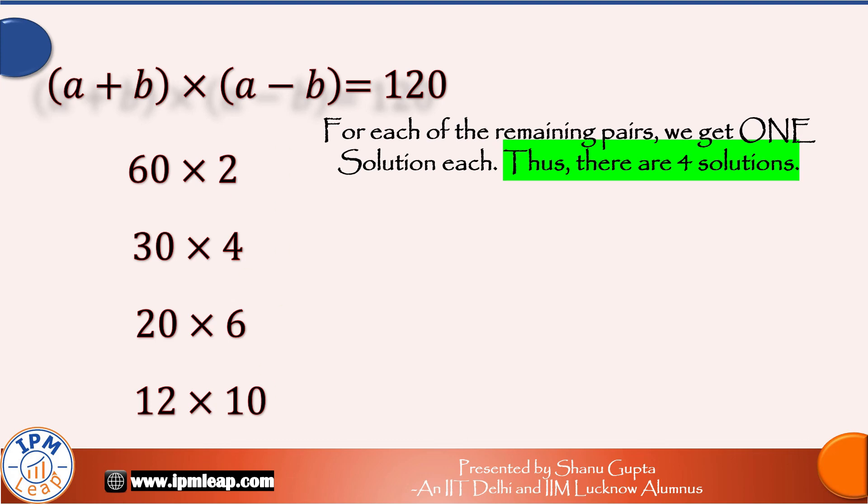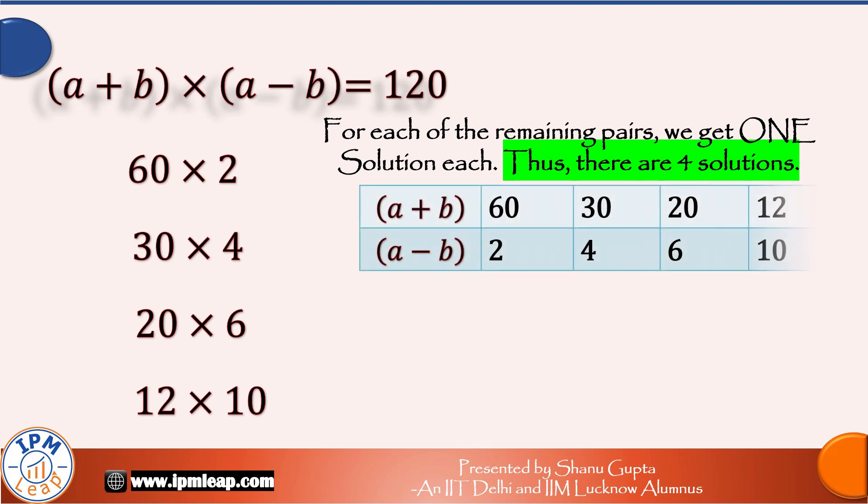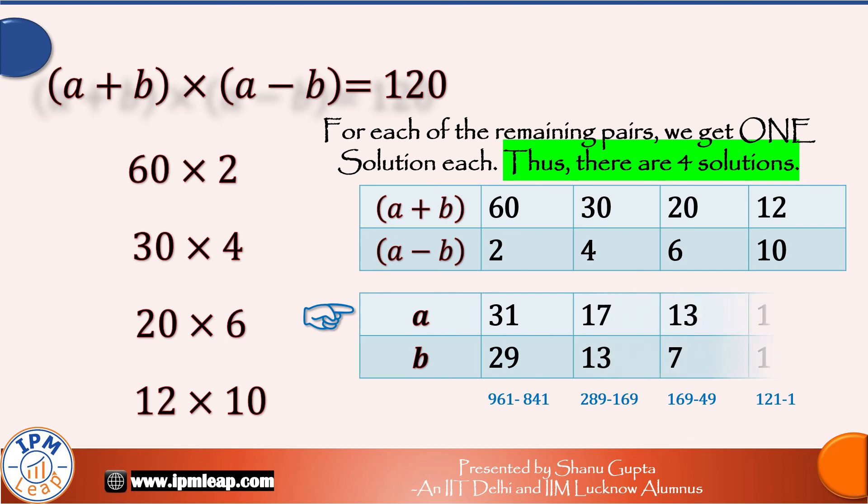I am tabulating those solutions in these tables. If a plus b and a minus b take these values, then a and b take these. And as you can see on your screen, they are integers. Here is a verification that a squared minus b squared is equal to 120 for each of these four pairs.